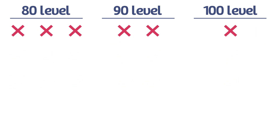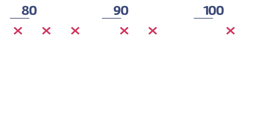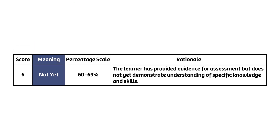Case 4: Students get all six questions wrong. What do we do if students get no questions correct? Do they receive a zero? Not at all. For students in the 60–69 range, our rationale is the learner has provided evidence for assessment, but does not yet demonstrate understanding of specific knowledge and skills. Therefore, I lean on the quality and quantity of work shown when determining if a student should be in the 60–69 range or drop down to the 50–59 level. Students receive a 65 if there is quality work shown and it seems they were close to getting a question or two correct.